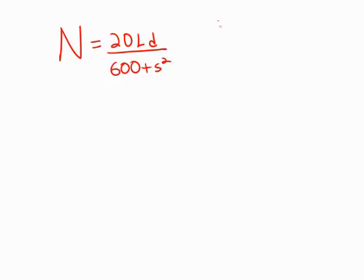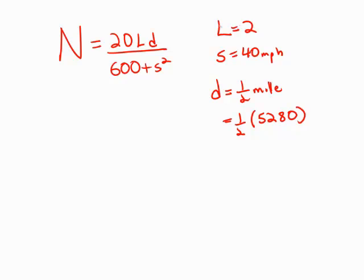So first of all, the values: number of lanes is 2, the speed is 40 miles per hour. And the length of this stretch of highway, D, this is half a mile, but we need this in feet. And they're good enough to tell us that one mile is 5,280 feet.